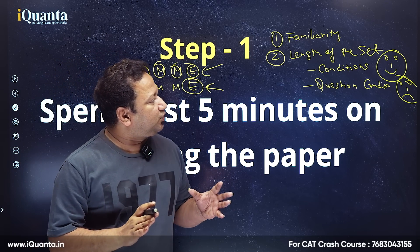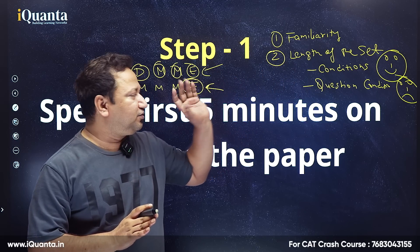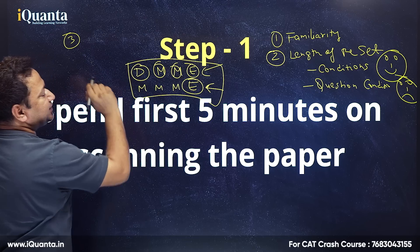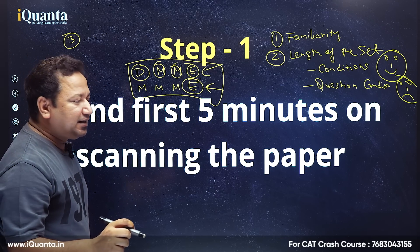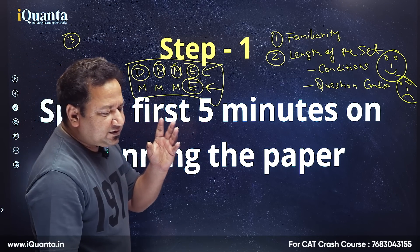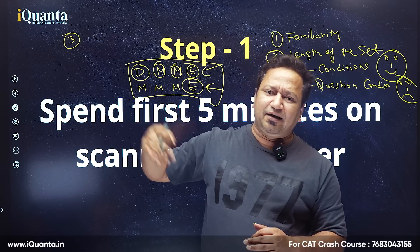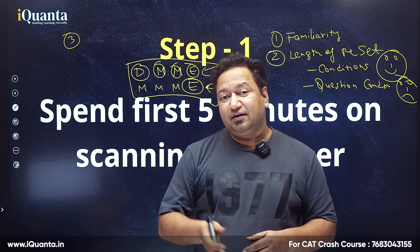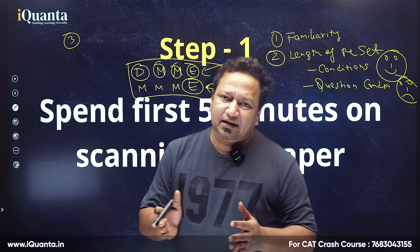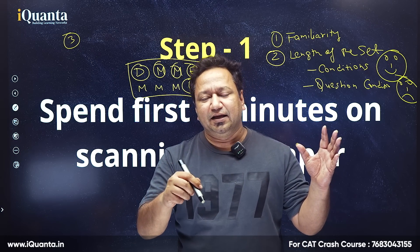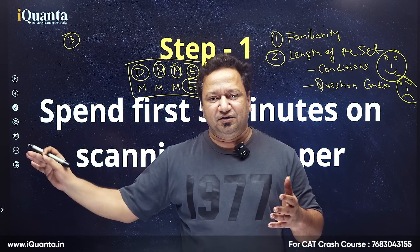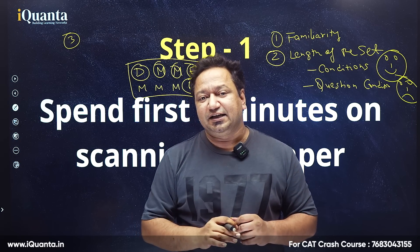Identifying the easy set is done by familiarity and length. The third thing which is going to help you a lot is looking at the questions as well, not just the set — and you should do all of this in 5 minutes. When you look at the questions, you can tell if they are calculation-based. If solving the set completely and making a table means all questions can be answered instantly, those are the easiest sets — pick those.